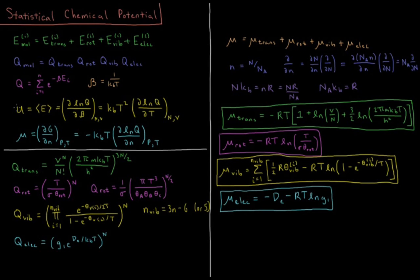We also saw that we derived the internal energy of the system, equal to the average energy from statistical mechanics, which is equal to the partial derivative of the natural log of the partition function with respect to beta (1/kT), at constant number of particles and constant volume. This is also equal to, doing the chain rule as a derivative in terms of T instead of beta: kT squared times d(log Q)/dT at constant N and V.